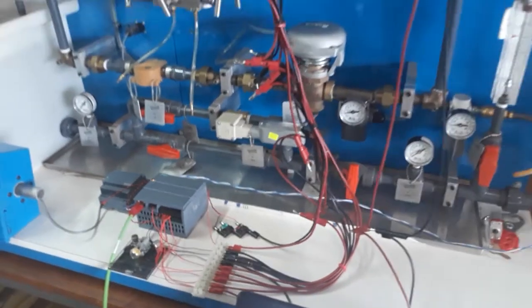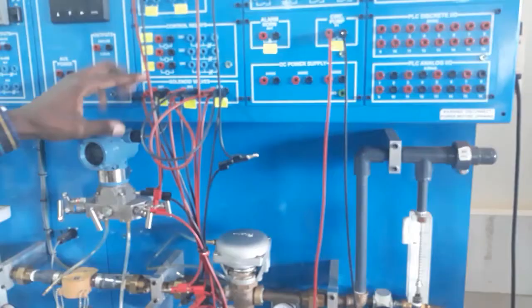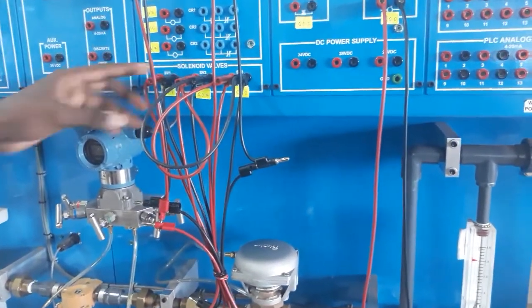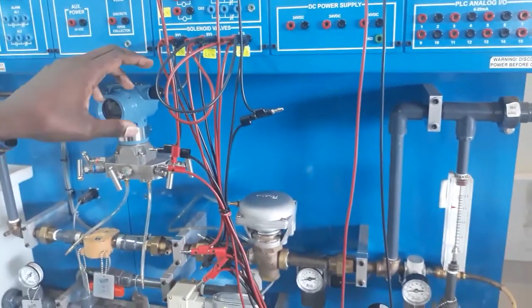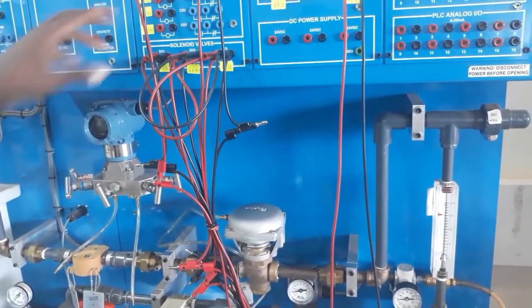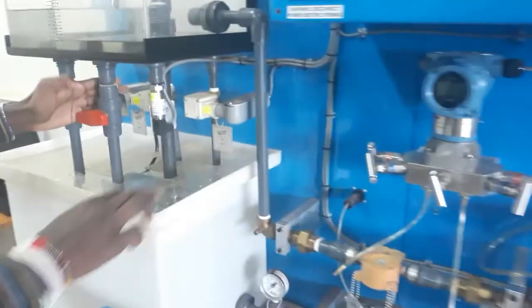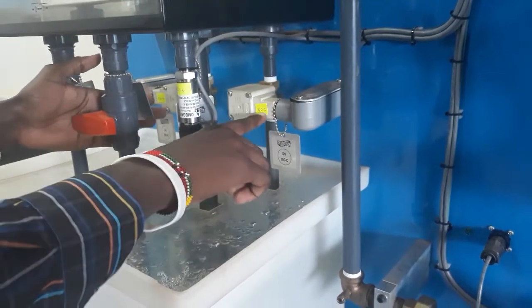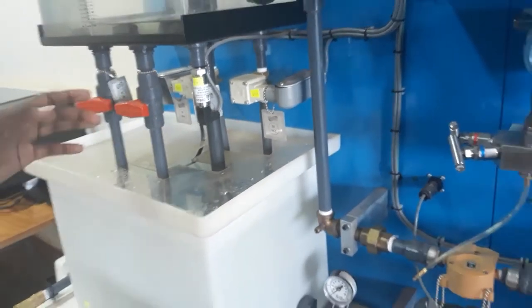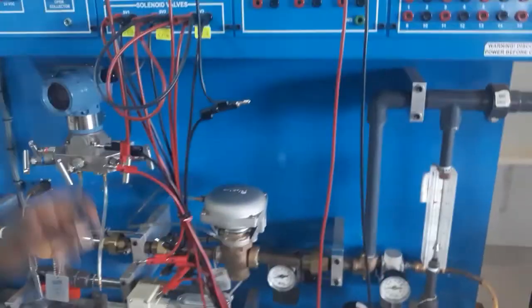The next three digital outputs are the solenoid valves. The first two solenoid valves are for draining, which can be seen here as valves two and four, and the next solenoid valve is for inlet flow.